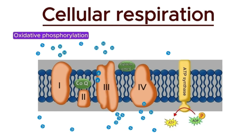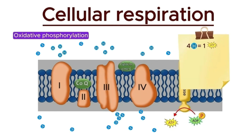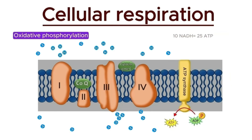Each NADH molecule results in the transport of ten protons across the membrane. Since it takes four protons to generate one ATP molecule, the oxidation of one NADH generates approximately 2.5 ATP molecules. Similarly, two NADH molecules produce around five ATP molecules, and a total of ten NADH molecules produce approximately 25 ATP molecules. From the ten NADH molecules, we get approximately 25 ATP molecules.